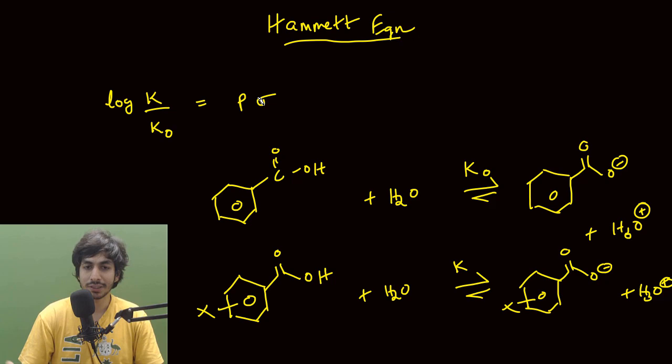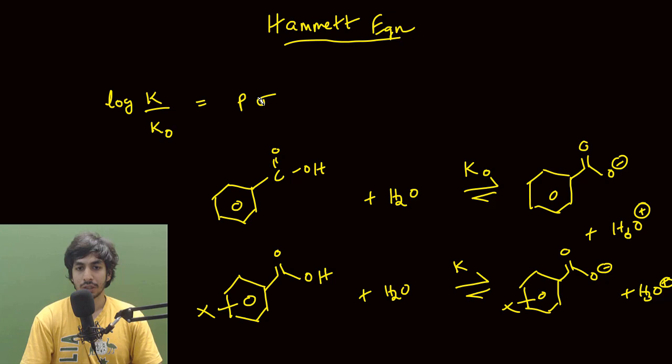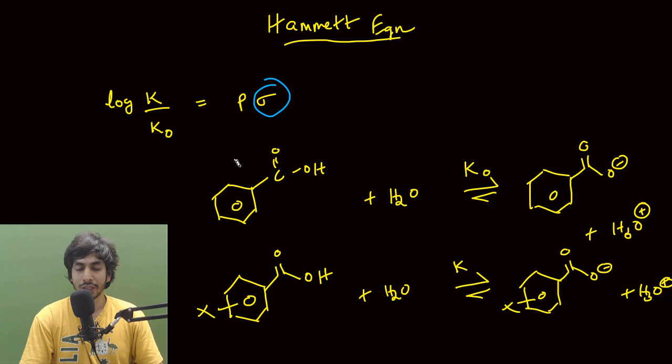So from here you understand what exactly k and k₀ are: k₀ is basically where we don't have any substitution, and k is the value when we have some substitution. Now the question is what exactly is ρ, what exactly is σ, and why do we need this equation? Hammett derived a linear relationship between the value σ and log(k/k₀). We can calculate pKa experimentally — it's very simple to calculate the pKa value.